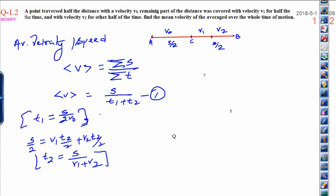Now, substitute in equation one. We will get v average is equal to s upon s upon 2v0 plus s upon v1 plus v2. Now, you have to simplify it. When you simplify it, average velocity you can write is equal to 2v0 times v1 plus v2, divided by v0 times v1 plus v2 plus 2v0 times v1 plus v2, which simplifies to v0 plus v1 plus v2. This is the way how you solve this question.